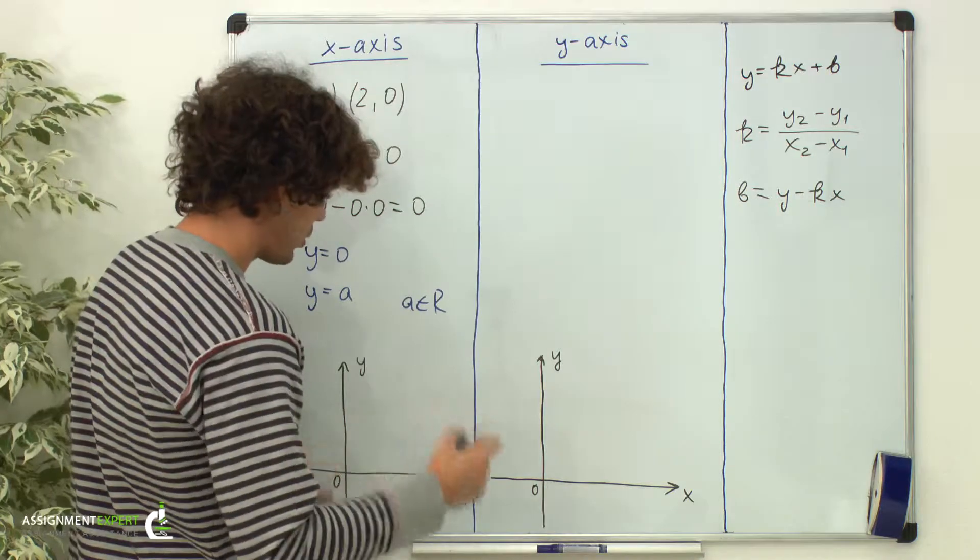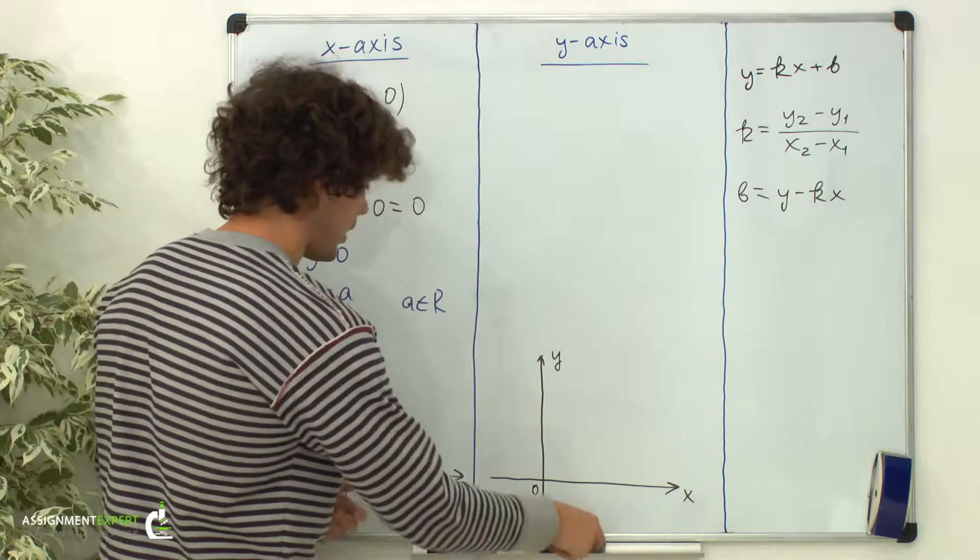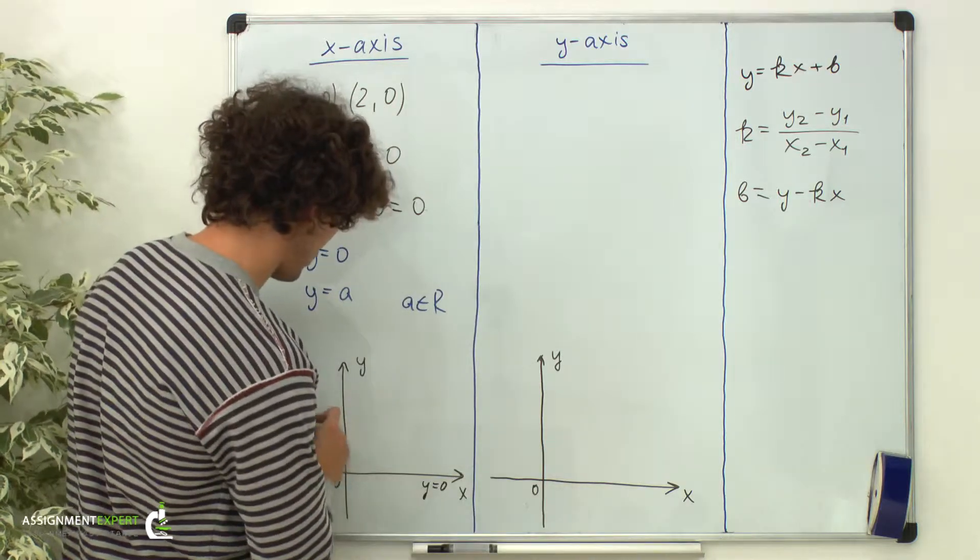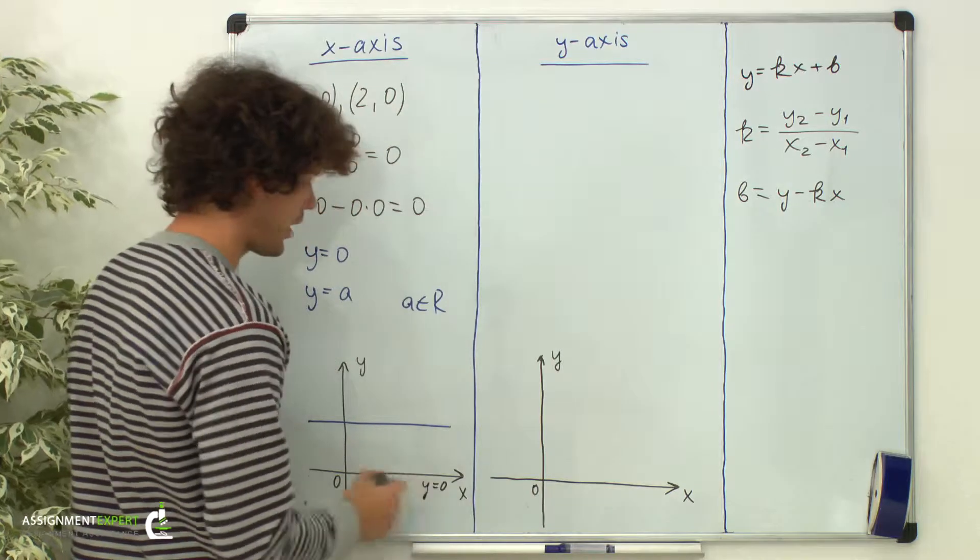y equals 0 is a horizontal line. And y equals a is a random line parallel to the x-axis.